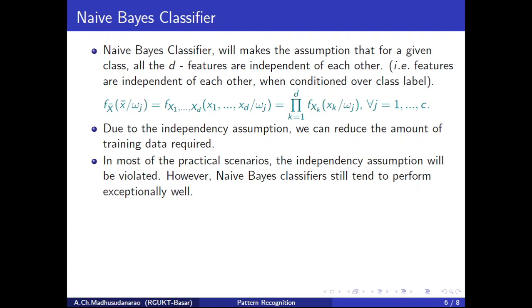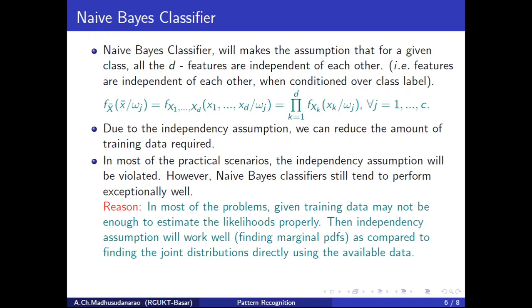In most practical scenarios, the independence assumption will be violated. However, Naive Bayes classifiers still tend to perform exceptionally well. The reason is that in most problems, the given training data may not be enough to properly estimate the giant likelihoods and giant probability density functions directly. The independence assumption works well — finding marginal PDFs with limited data is better than attempting to find the giant distributions directly. With limited training data, if you try to estimate the giant distributions directly without marginals, you will get erroneous giant distributions because the training data is not sufficient.